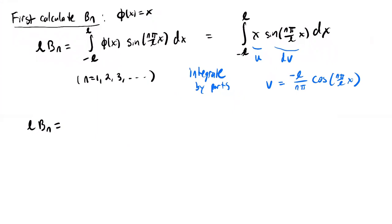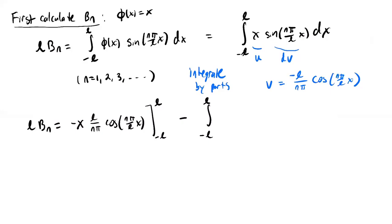Using the integration by parts formula, we get u times v evaluated at the boundary minus the integral of v du. Plugging in: negative x times (L/nπ) cosine(nπ/L · x) evaluated from minus L to L, minus the integral from minus L to L of negative (L/nπ) cosine(nπ/L · x) dx. The du term is just one, so we get the boundary term plus (L/nπ) times the integral of cosine(nπ/L · x) dx.